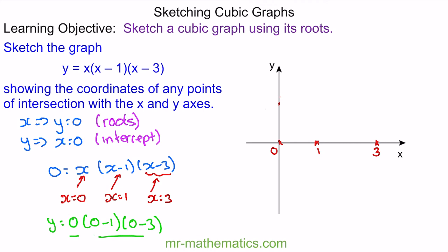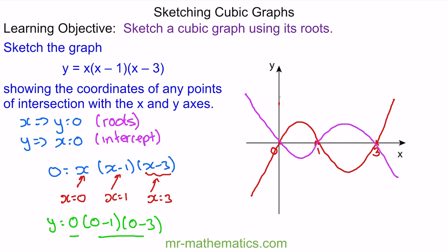Now the question is: does our graph go up and then down and then back up again, or does it go down and then back down? If we consider the x terms, we have x multiplied by x multiplied by x, which is x cubed. We know that y equals x cubed looks like this, so the graph will start in this quadrant. The red curve gives the accurate sketch of this equation.